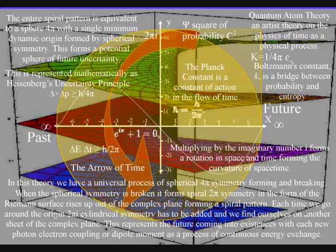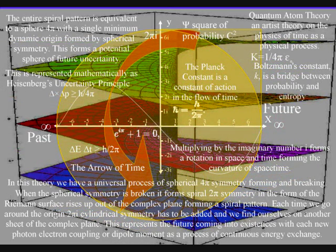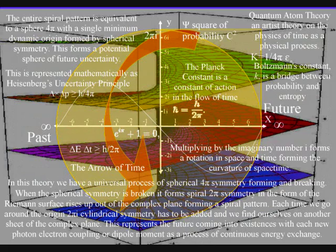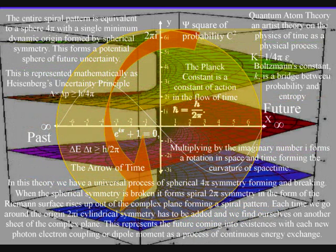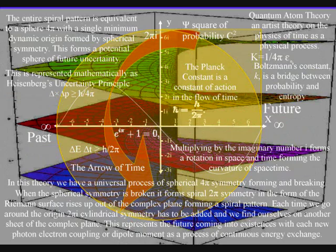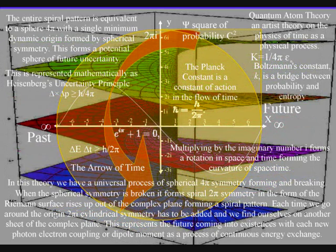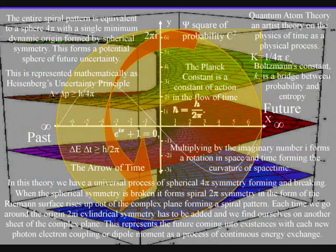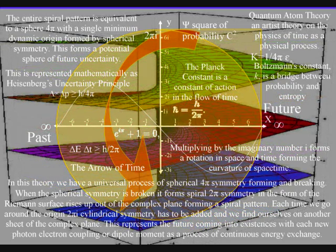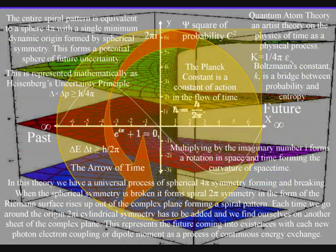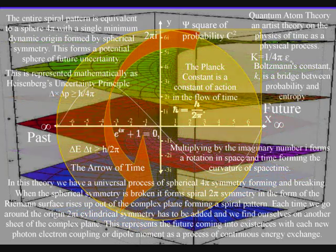There will always be uncertainty at the quantum level and in our everyday life because the imaginary number i is the square root of minus one, representing the rotational symmetry that maintains the probability function at t equals zero, the moment of now. It may seem at times that the theory is explaining the paradoxes of mathematics rather than the mathematics explaining the theory. This is because human mathematics is based on the dynamic geometry of this theory, as can be seen in the way Euler's identity and imaginary numbers are part of the theory. At each rotation of the origin, two pi, cylindrical symmetry has to be added, and we find ourselves on another sheet of the complex plane.